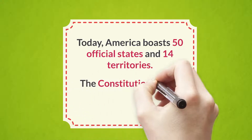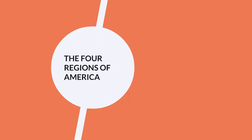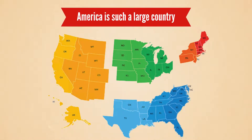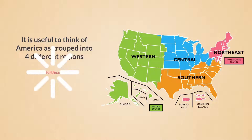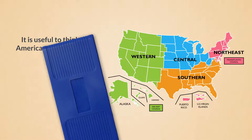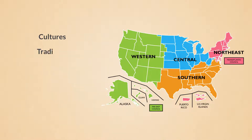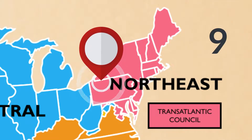The Constitution grants Congress the authority to admit new states. Since America is such a large country, it is useful to think of America as grouped into four different regions: the Northeast, the South, the Midwest, and the West, each with their own distinct cultures, traditions, terrain, laws, accents, and even way of life. The Northeast contains nine states.